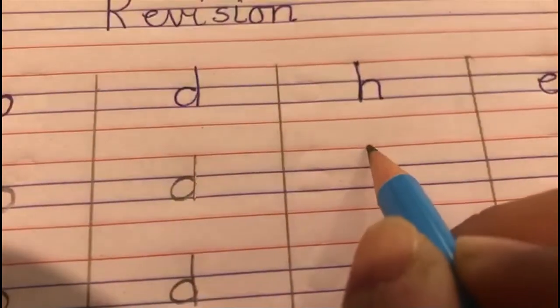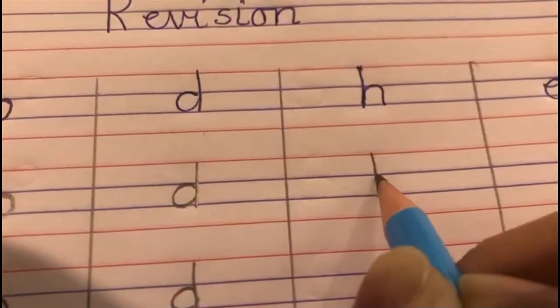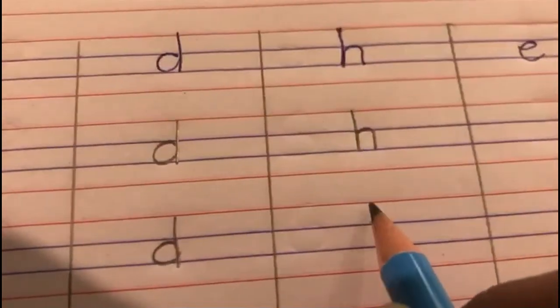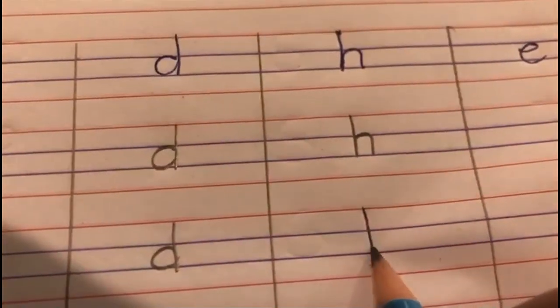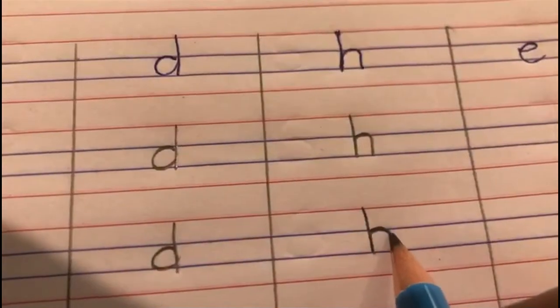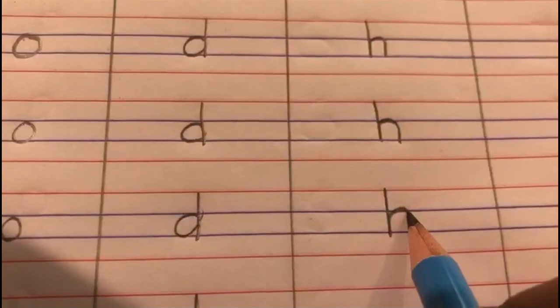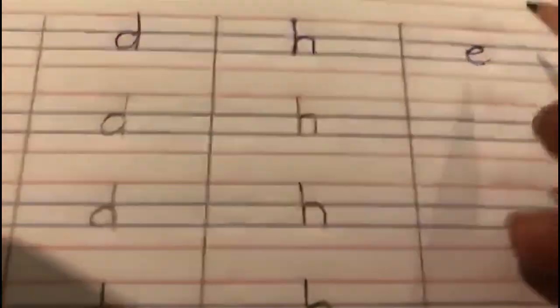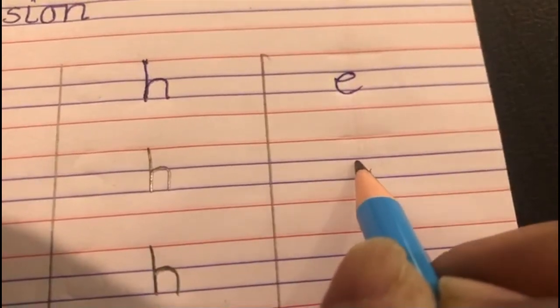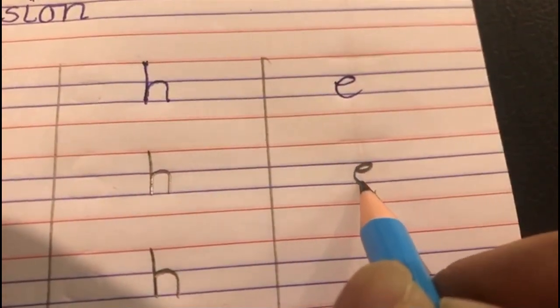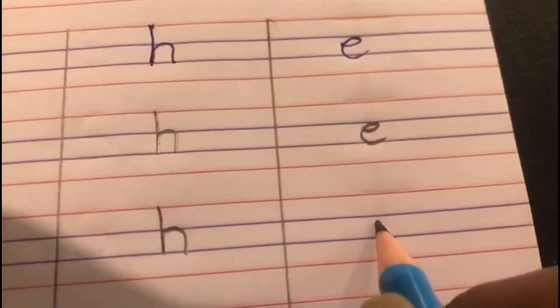Now, H. H says H. H says H. So you start from the red line. You go down to the blue line. You go up to the blue line and make a bumpity. H says H. H says H. And then E. E says E. E says E.